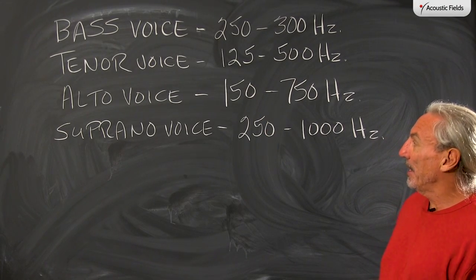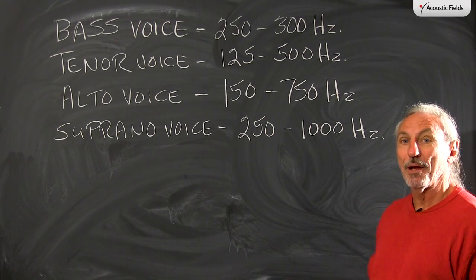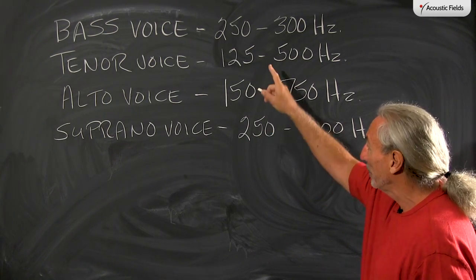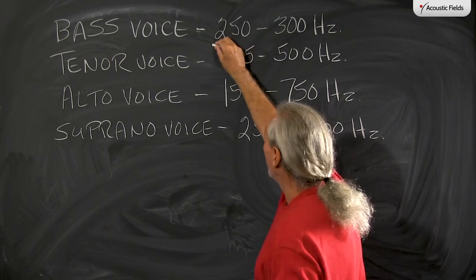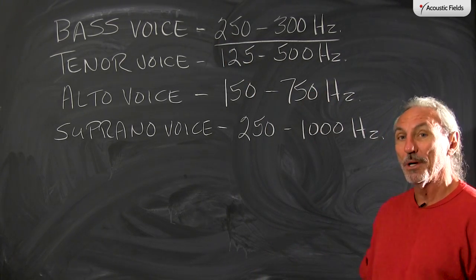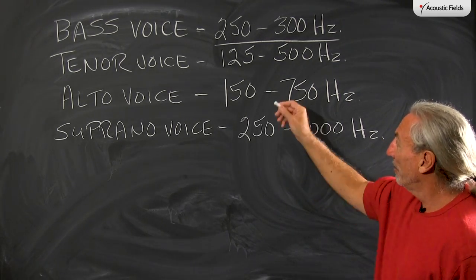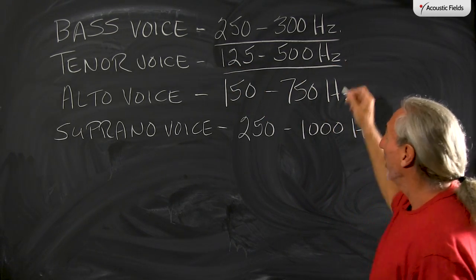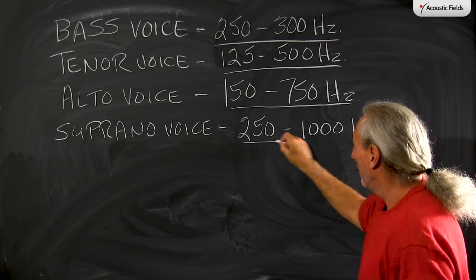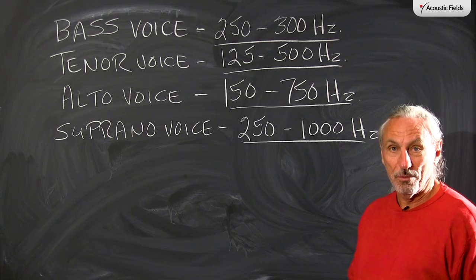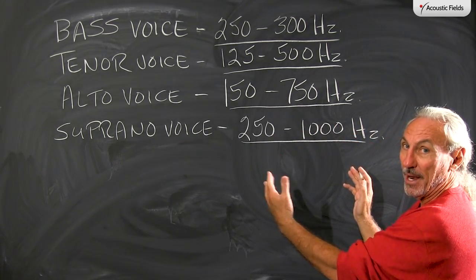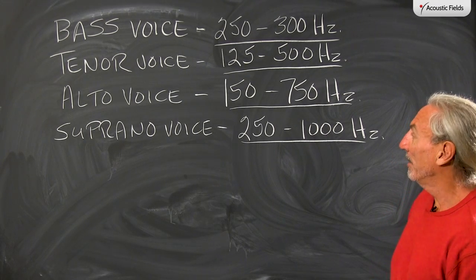Let's look at some examples using bass, tenor, alto, and soprano voices to clarify octave bands and the ranges with which they operate. A real low bass voice sits in the 250 to 300 hertz range; a tenor voice is 125 to 500; alto is 150 to 750; and soprano is 250 to 1000. You can see that there are ranges to the octave bands, just as we discussed.